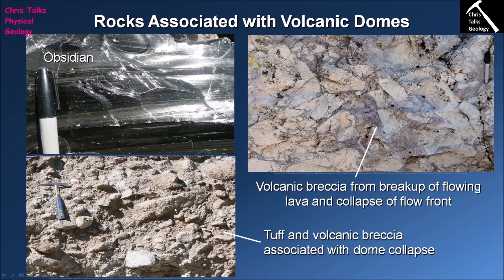The final rock type commonly associated with volcanic domes is tuff, which results from dome collapse — whether from landslides or explosive destruction. This creates a large amount of ash and dust which gets thrown up, settles back onto the ground, and forms an ash-rich layer we refer to as tuff. Thank you for watching everybody, and have a good day.